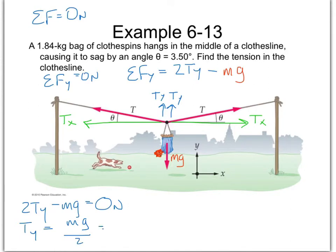What is our MG? What is our actual weight force? So we know the mass of the bag, and we know what G is. So that's going to be the 1.84 kilograms times 9.81 meters per second squared, divided by two. And that's going to give us our T Y force. What is that? 1.84 times 9.81 divided by two. 9.0 Newtons. Let's dot a line box that. That's not our final answer, but that's the key to getting our final answer.